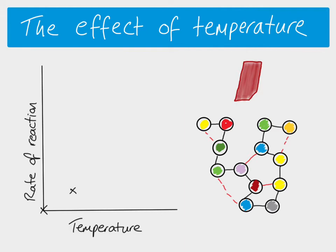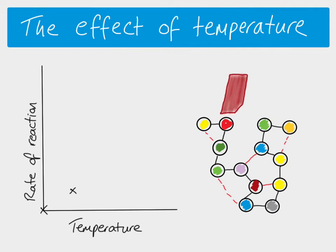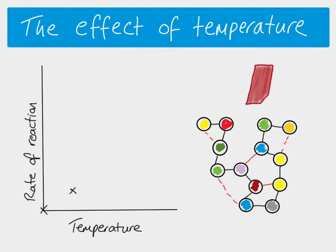If we increase the temperature, then that means that both our substrate and our enzyme molecules are moving a bit faster. So when they collide, they collide with more energy, the reaction is more likely, and also the collisions are more frequent because the molecules are just moving around faster. If you keep increasing the temperature, you keep increasing the kinetic energy, which means you're making the molecules move faster and faster, so collisions are more frequent and more likely to be successful.